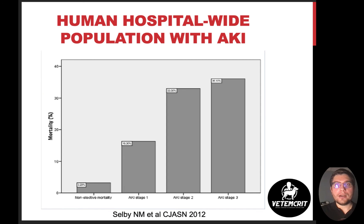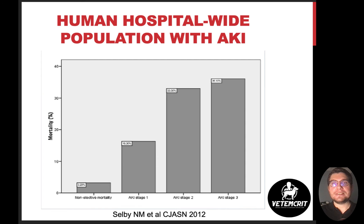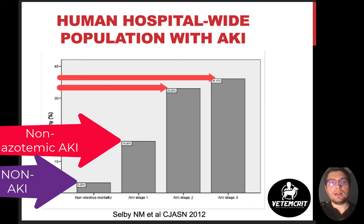Why do we care so much about non-azotemic kidney injury? It turns out that having even mild AKI such as stage 1 without azotemia dramatically and independently worsens survival in humans. Looking at this diagram showing mortality rates in hospitalized ICU patients with various illnesses, patients with AKI — regardless of stage — have much higher mortality rates that correlate with injury severity. The difference between non-AKI patients and non-azotemic AKI patients (stage 1) is almost six-fold, independent of the underlying condition. As AKI progresses from stage 2 to 3, the mortality rate continues to rise.